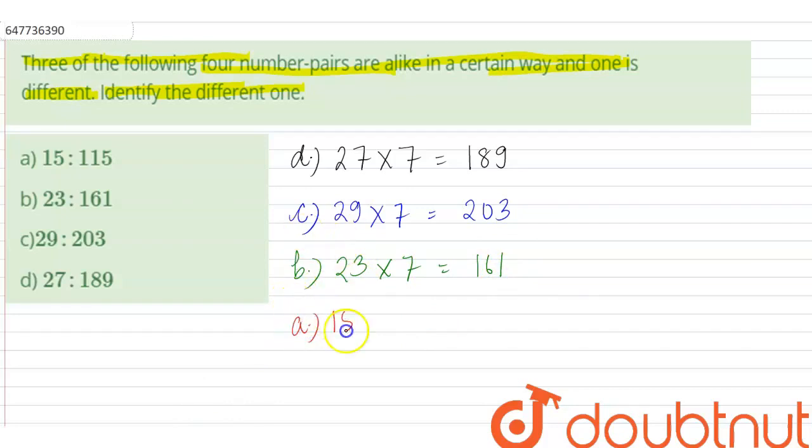If we look at option A, that is 15 to 115, then 15 multiplied by 7 is 105, not 115.